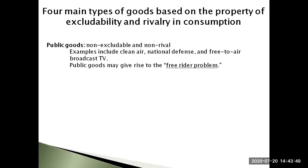Goods that are both non-rival and non-excludable are called public goods. Examples include clean air, national defense, and free-to-air broadcast TV. It is generally accepted by mainstream economists that the market mechanism will under-provide public goods, so these goods have to be produced by other means including government intervention or government provision. Individuals cannot be effectively excluded from using them, and use by one individual does not reduce the goods available to others. Examples also include public parks and street lights. Public goods may give rise to the free rider problem — a free rider is a person who receives the benefit of a good without paying for it — which can lead to the under-provision of certain goods or services.